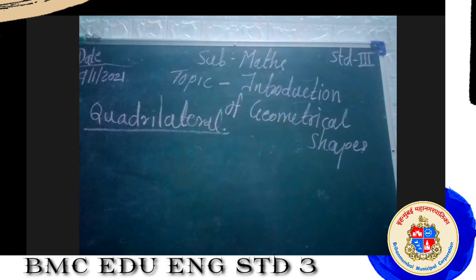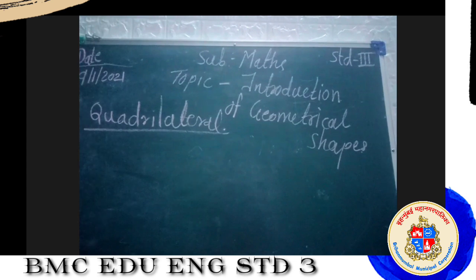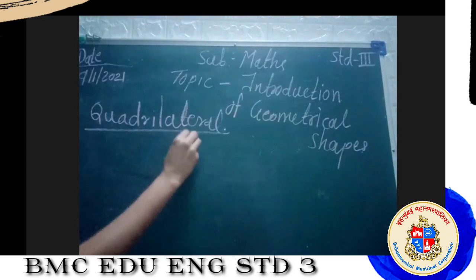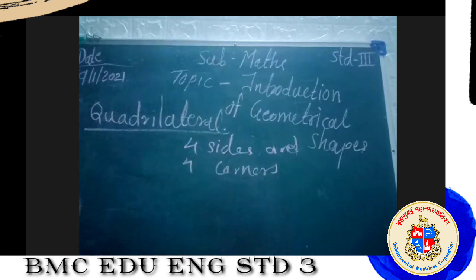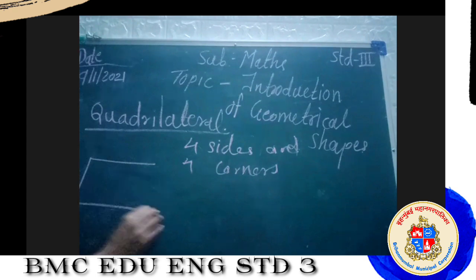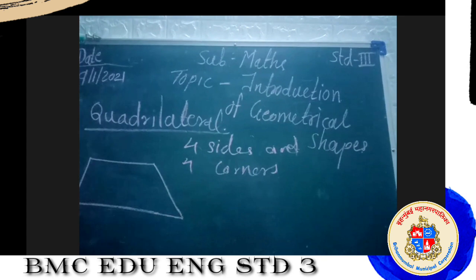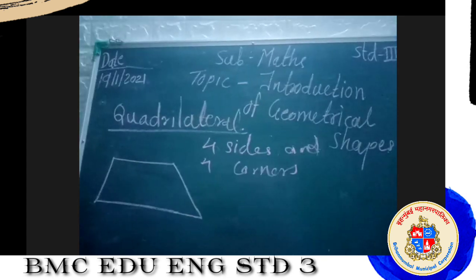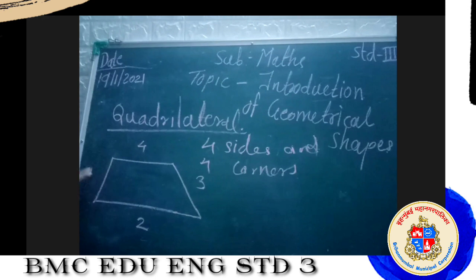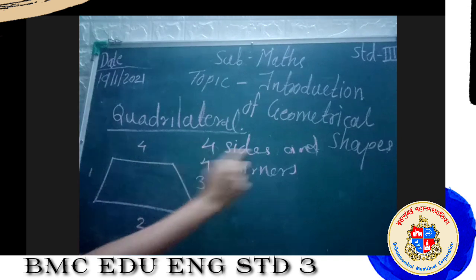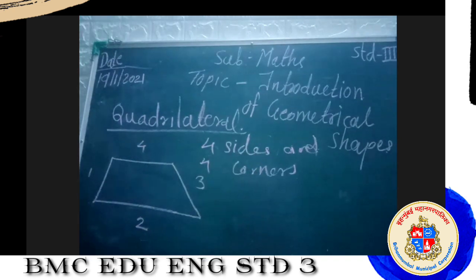What is a quadrilateral? Quadrilateral means a figure with four sides and four corners. Now I am drawing one figure. Observe this figure — how many sides are there? There are four sides: first, second, third, and fourth. So this figure is a quadrilateral. There are different types of quadrilateral.